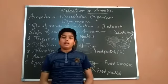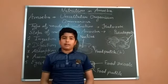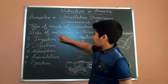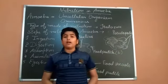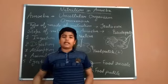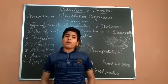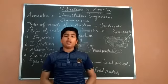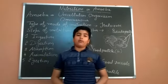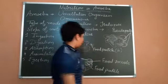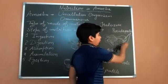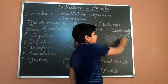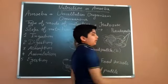We will learn about these five steps, step by step. Starting from the first step: Amoeba has no mouth, so it can intake food from any part of the body. The finger-like structures which help it to intake food are known as pseudopodia. These pseudopodia surround the food particles, helping it to intake the food.